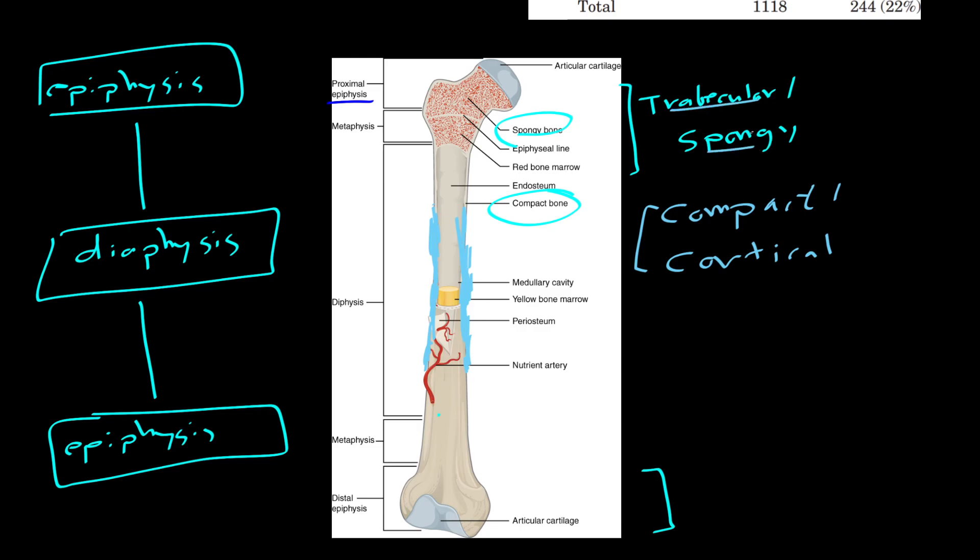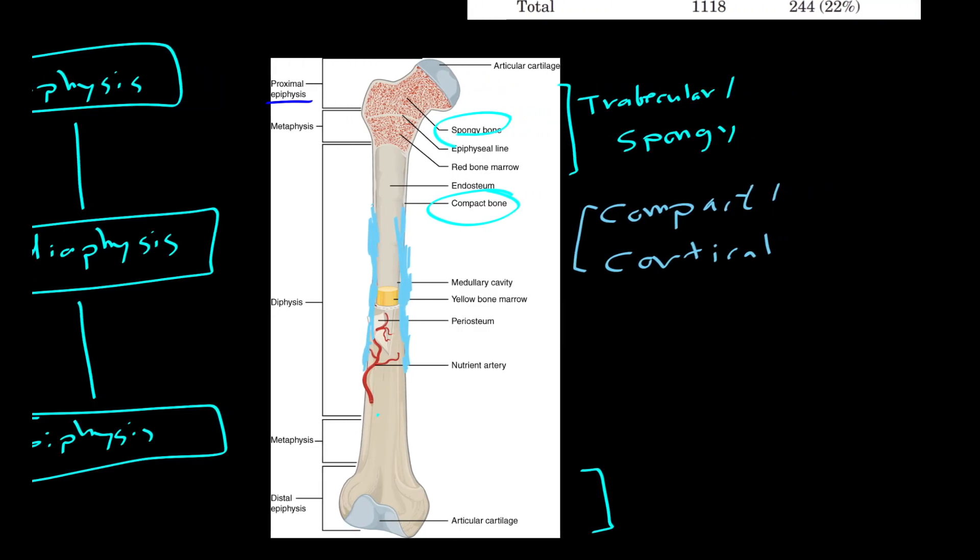Trabecular and spongy bone is spongy because it's a useful place to put your bone marrow. So there's a lot more bone marrow, which perhaps, as you know, is where our body makes blood cells. So there is still some of it in compact bone, it's in the middle. But bone marrow, more plentiful up here.